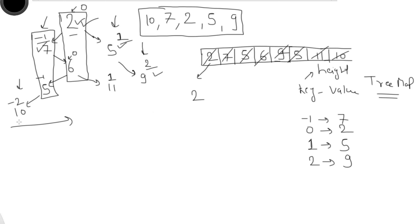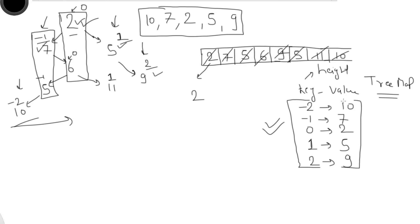We remove node 10. Its height is minus 2, which has not been added to the map yet, so we add height minus 2 with value 10. The queue is now empty so we are done. We print all values from the TreeMap in order of height from minus 2 to 2: 10, 7, 2, 5, 9 — exactly the top view we wanted.